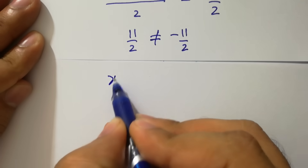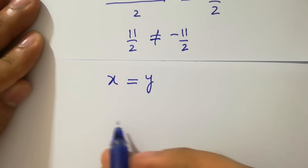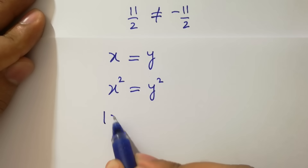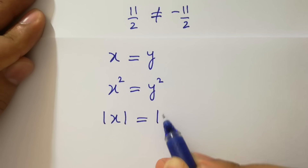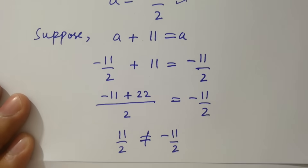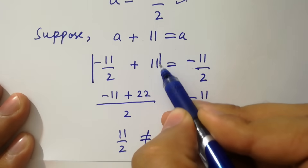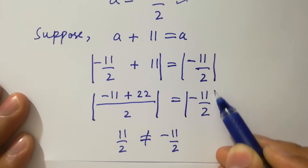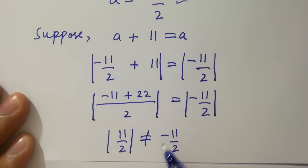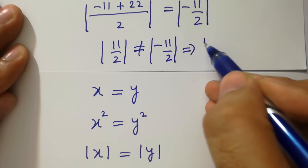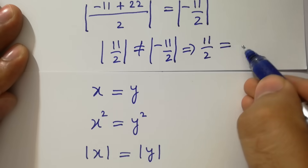As x equal to y implies x square equal to y square, and also the absolute value of x equal to the absolute value of y. So we should take modulus on both sides. By this, we get 11 over 2 which is equal to 11 over 2. ✓